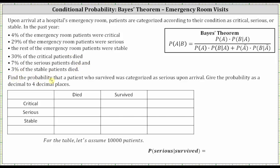We're asked to find the probability that a patient who survived was categorized as serious upon arrival, which is the conditional probability — the probability the patient was classified as serious given the patient survived — indicated using the notation shown here. We're asked to give the probability as a decimal to four decimal places. Let's first complete the table below, assuming there are 10,000 patients.